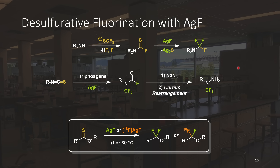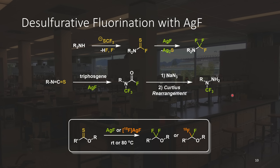The Schoenbeck group has examined the use of silver(I) fluoride with thiocarbonyl fluorides as a method of preparing trifluoromethylamines, and in recent years they've expanded this work to include trifluoromethylhydrazines and trifluoromethylcarbamates. My work focused on the examination of the reactivity of silver(I) fluoride with oxygen-containing thiocarbonyl compounds.